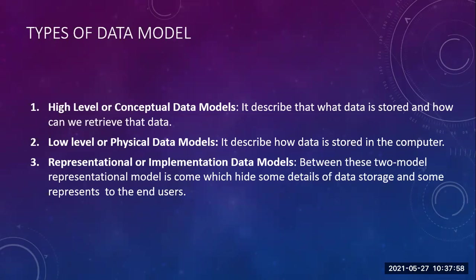So what was the data model? It is the overall structure of the database. The different types: high-level or conceptual data model equals 'what data'; low-level or physical data model equals 'how data is stored'; and the representational or implementation data model, which is not necessary to be visible to the users. These are the three types of a data model.